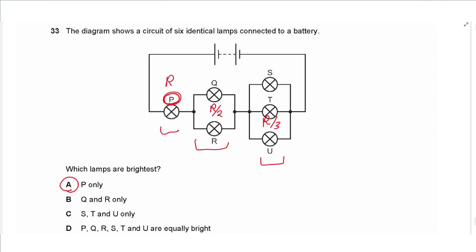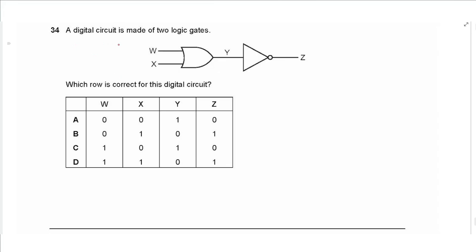Question 34 is about logic gates — an OR gate followed by a NOT gate. For the OR gate: 0 and 0 gives 0; 0 and 1 gives 1; 1 and 0 gives 1; 1 and 1 gives 1. Passing 1 through the NOT gate gives 0. The row matching these outputs is C, confirming the answer is C. Note: this question is removed from the new syllabus.